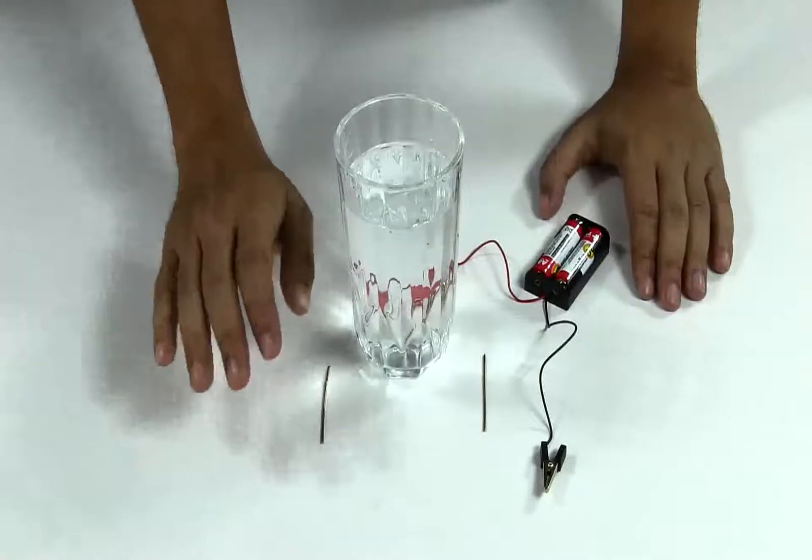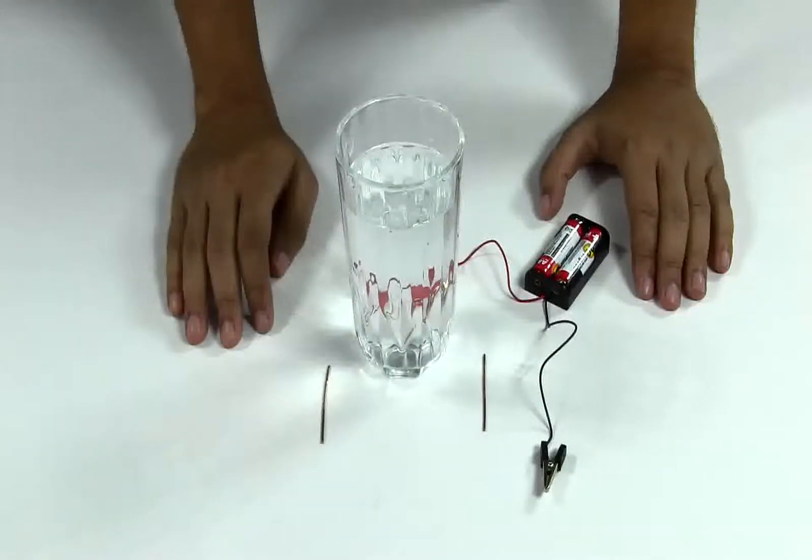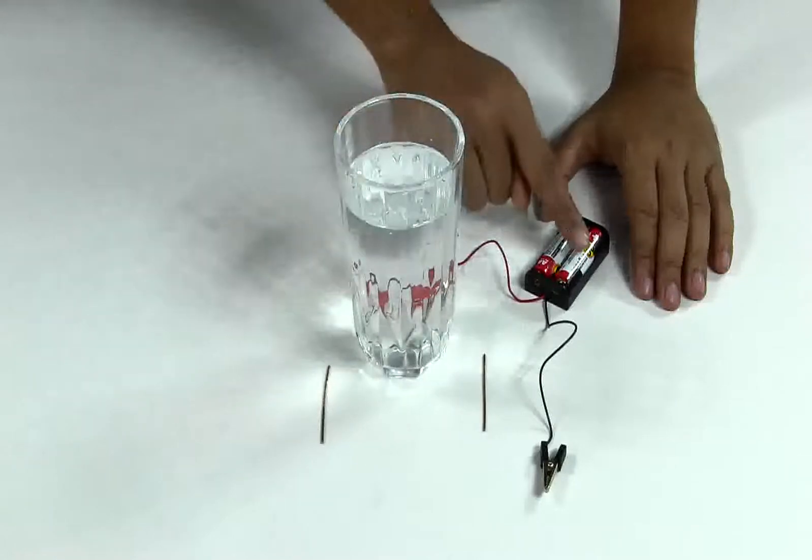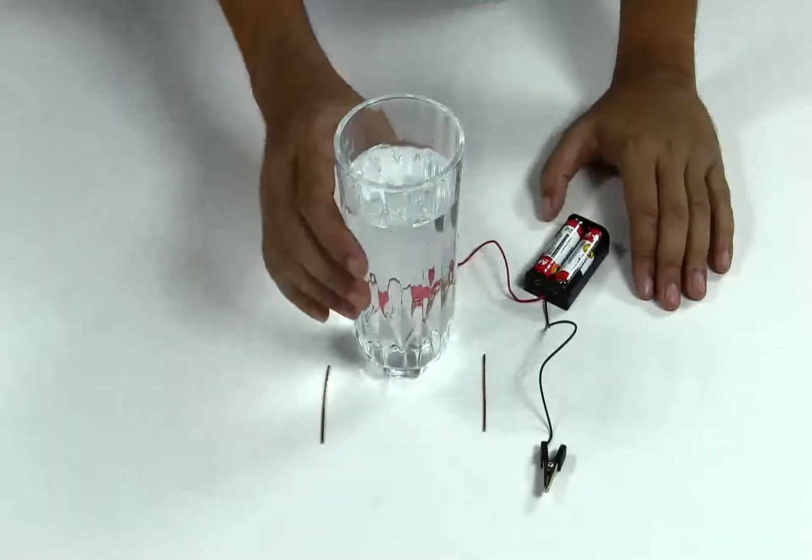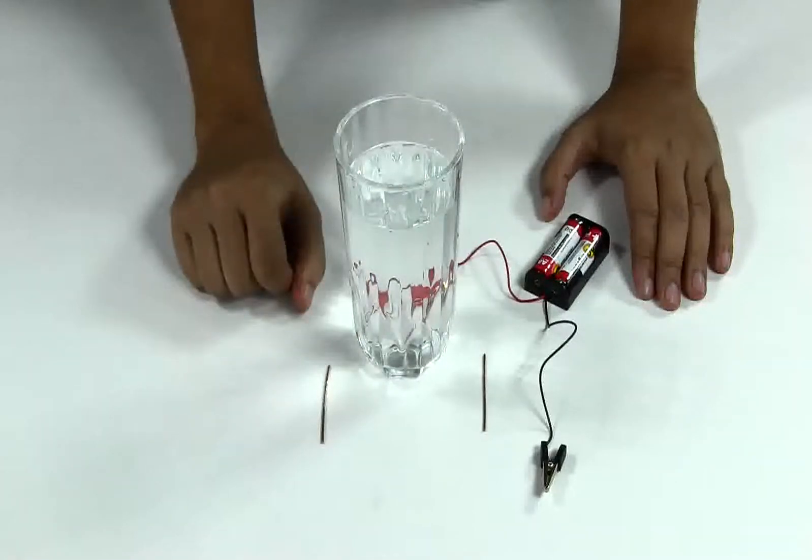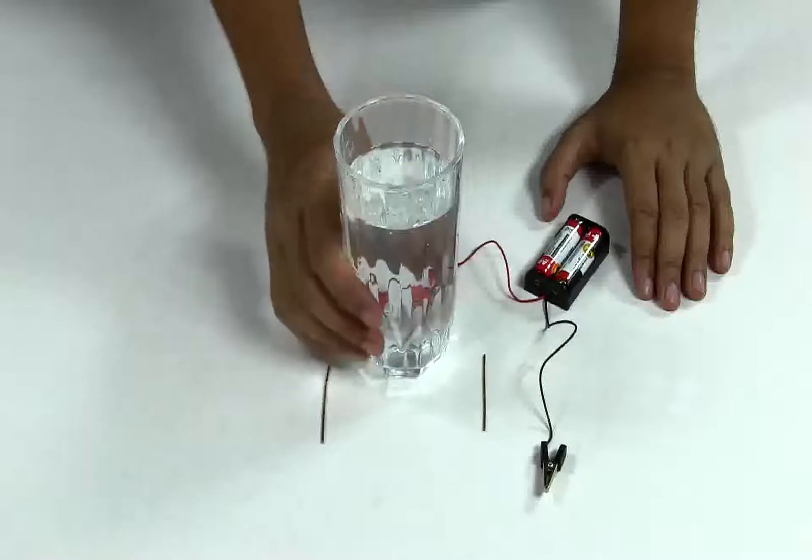In this experiment, we are going to perform electrolysis. Electrolysis means breaking down a chemical by using electric current. Here in this glass, I have diluted some table salt. Table salt is sodium chloride, so in this glass we have sodium ions and chloride ions.